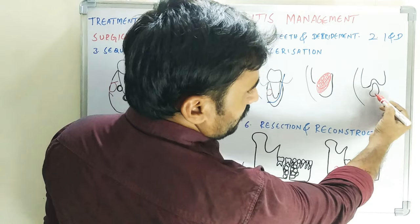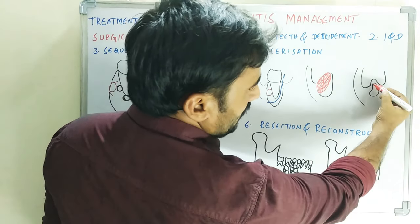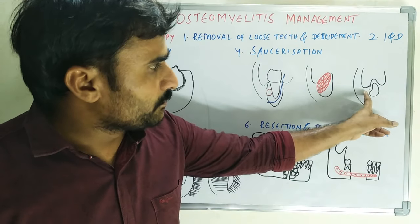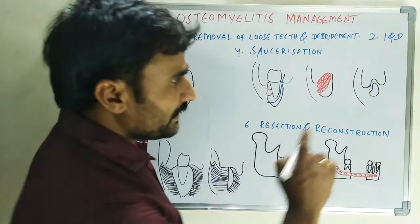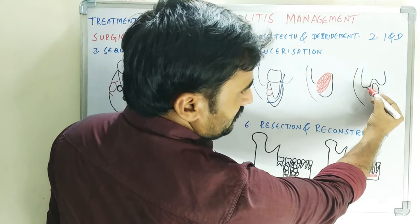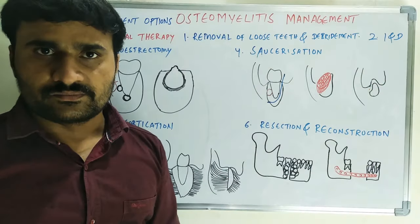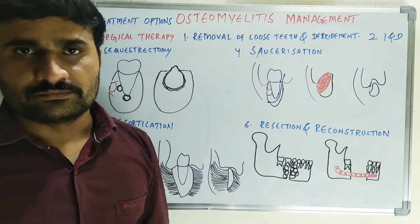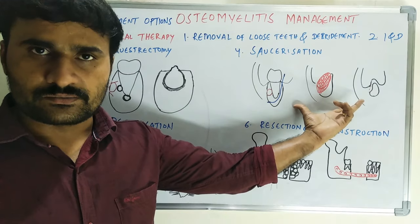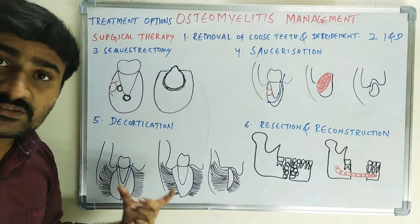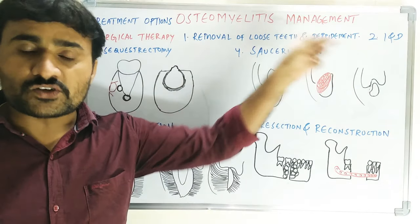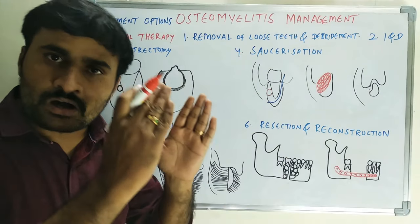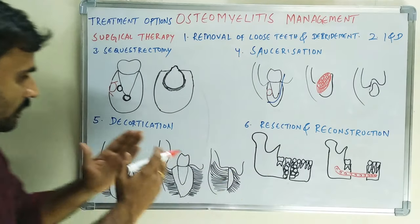In the diagram you can see the mandible with the bony defect from saucerization and new mucosal lining forming by secondary intention. Coming to decortication: this is more extensive compared to saucerization. Saucerization is done for limited extension, but when there is a large lesion, decortication is performed.